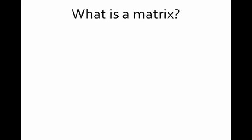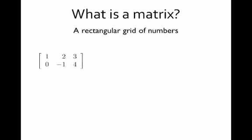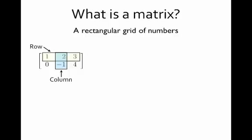So what's a matrix? Well, a matrix is simply a rectangular grid of numbers, and that's all it is. Structurally, we talk about the rows of a matrix — the things that go from left to right — and the columns of a matrix, the things that go up and down, just like the columns on a building. This particular matrix has two rows and three columns, so we say it is a 2 by 3 matrix.